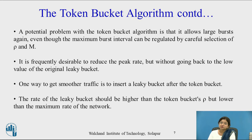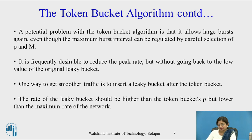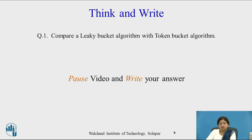One way to get smoother traffic is to insert a Leaky Bucket after the Token Bucket. In this combined Token Bucket Algorithm, both algorithms are used. The rate of the Leaky Bucket should be higher than the Token Bucket rate but lower than the maximum rate of the network.